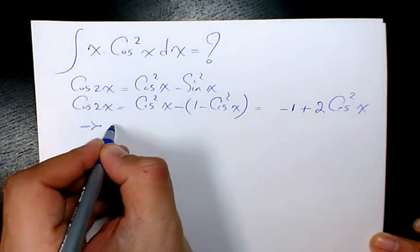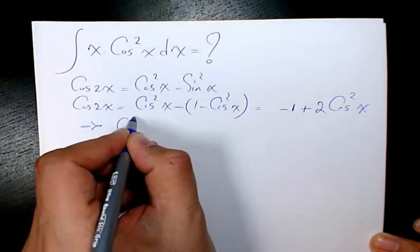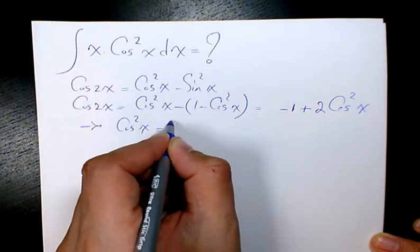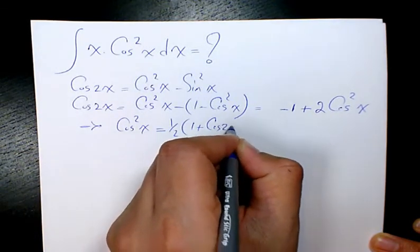Then we can move it over and we can say cosine squared x will be 1 over 2 times 1 plus cosine 2x.